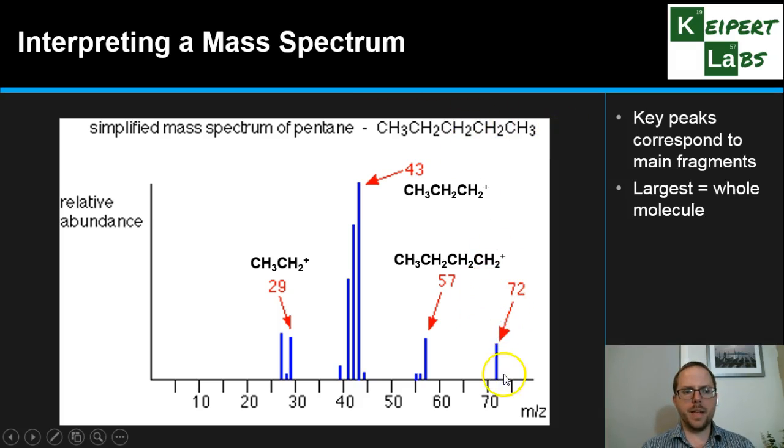The largest fragment at 72 corresponds to the whole molecule—it's unfragmented, and that's typically the largest one you're going to pick up if it's a pure sample. The other main fragments correspond to different breaks at different points in the chain. If one carbon group breaks off, we get a 57 fragment. If two carbons break off, we get a 43 fragment. Because there's more than one way to break off from either end, you get quite a strong peak there—it breaks in the middle quite effectively.